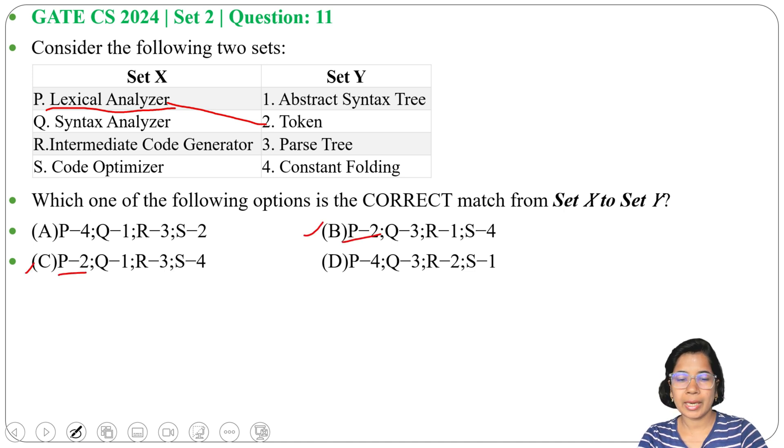Whereas in option A and option D, P matches with 4. So option A and option D are ruled out.